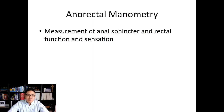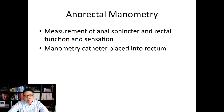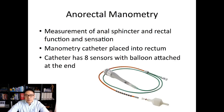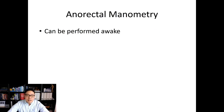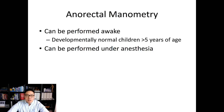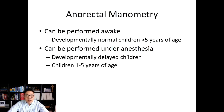Moving on to anorectal manometry testing. Much like colonic manometry, this measures anal sphincter and rectal function, but also sensation, and involves a catheter placed into the rectum. The catheter has eight sensors arranged closely together with a balloon at the end. The test can be performed awake, which is preferred — typically possible for kids older than five, though sometimes younger kids can manage. It can also be performed under anesthesia for kids who are developmentally delayed or cannot tolerate the test. Ages one to five can sometimes be managed with distraction or even hypnosis.